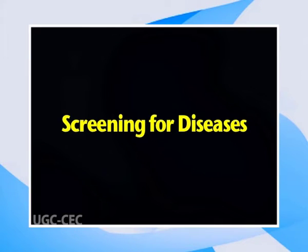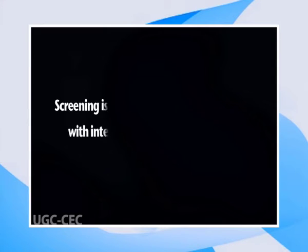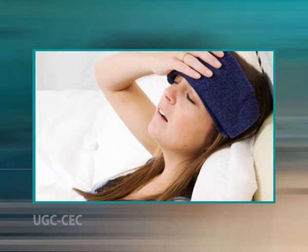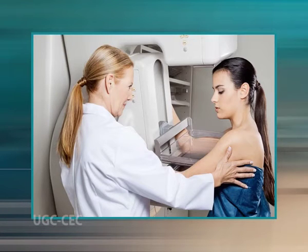Screening is the process of detecting disease early with the intention of intervening to halt its progression. This is linked to the idea of secondary prevention — interventions to stop further decline once a disease has begun but before symptoms appear. Secondary prevention requires a way to proactively detect the disease as early as possible, perhaps even before the patient is aware of it. Screening is justified when early intervention is more successful and cost-effective than passively waiting until symptoms appear and then treating the condition.